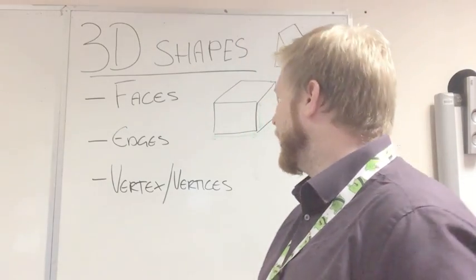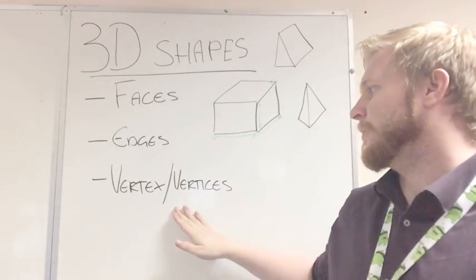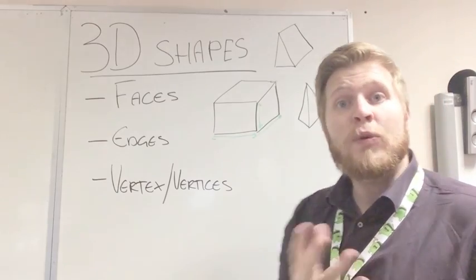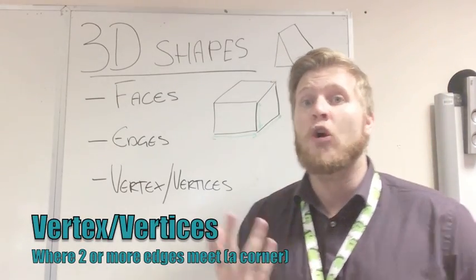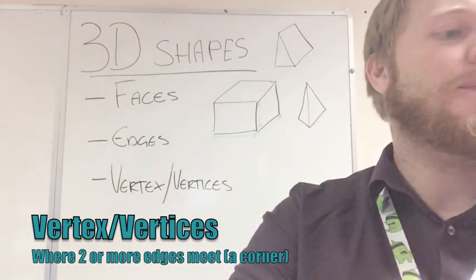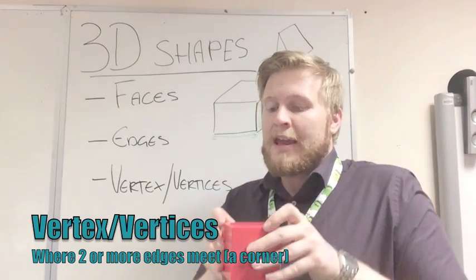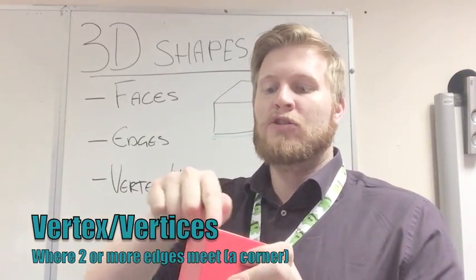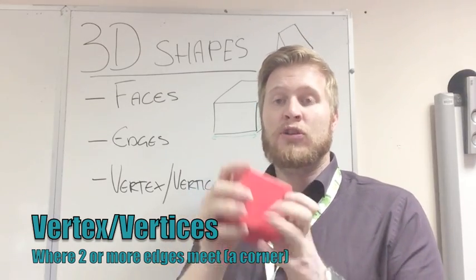The last thing we're going to look at are vertex or vertices. It's called vertex if there's one of them, vertices if we have more than one. The simple way to put what this is, is a corner. What a vertex technically is, is where two or more edges meet. You can see we've got three edges coming in there, but it still comes to a corner.